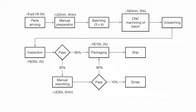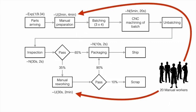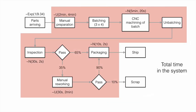You may ask why we are interested in modeling this line. In particular, we assume there is a group of 20 manual workers responsible for performing both the manual preparation and the reworking. Since these take quite some time per part, we may want to look at what the utilization of these 20 workers is, or more interestingly, we may want to know how long a part takes from when it arrives until it is actually shipped — that is, the total time in the system.